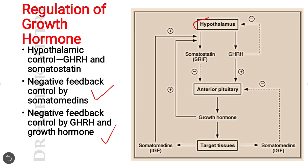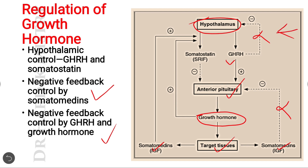From the hypothalamus, growth hormone releasing hormone is released. Once GHRH is released, it has a negative feedback on the hypothalamus so there will not be any more synthesis of GHRH. This GHRH stimulates the anterior pituitary gland and growth hormone is released into the blood circulation. Growth hormone reaches the target tissues and potentiates its effects while somatomedins — the insulin-like growth factors — are released. Once IGF-1 is released, it has a negative feedback over the anterior pituitary so there will not be any more release of growth hormone.